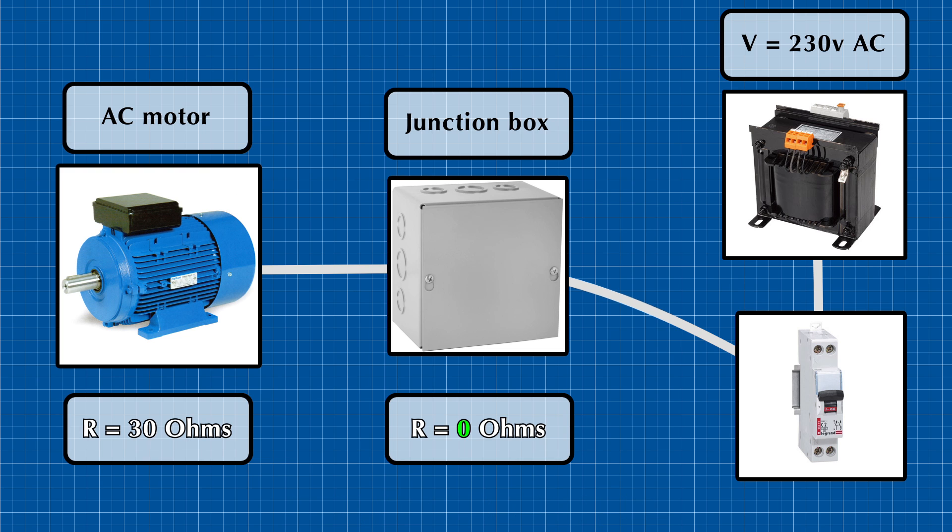However, what if it is a loose connection? A loose connection means a harder path for current to pass through, which means a higher resistance. So when there is a loose connection in the junction box, it will have a bigger resistance like 5 ohms.